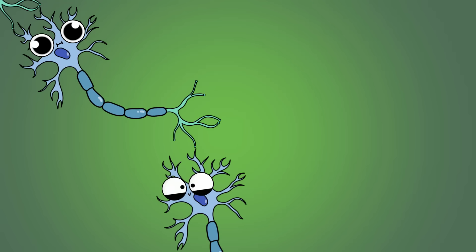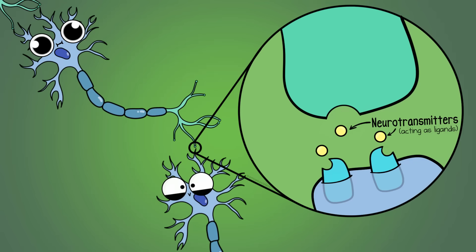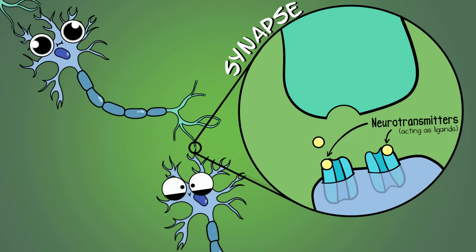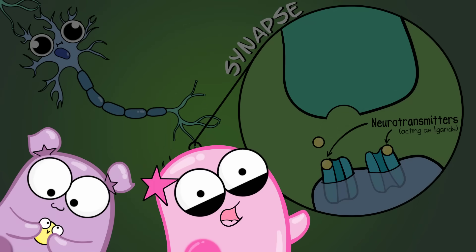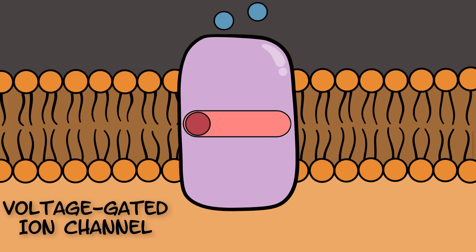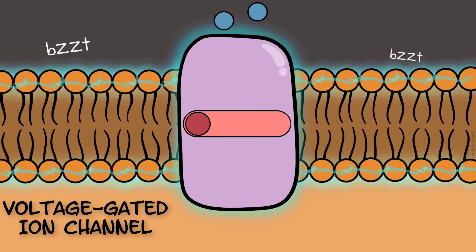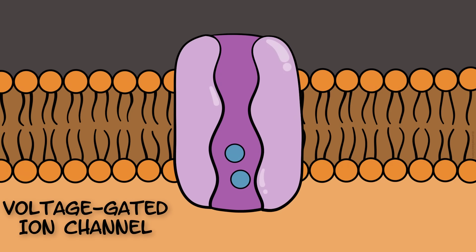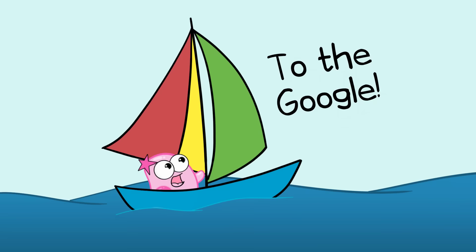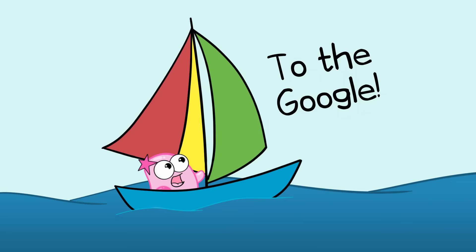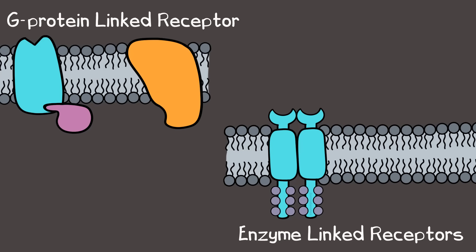Ligand-gated ion channels can be used by neurons — a neurotransmitter may be the ligand for the channel to open, and this could happen in a synapse. Be aware that not all ion channels are ligand-gated. A voltage-gated ion channel, for example, depends on electrical membrane potential, not a ligand. Voltage-gated ion channels are used by neurons too. There are other types of cell membrane surface receptors as well — G-protein-linked receptors and enzyme-linked receptors are two other types worth exploring.